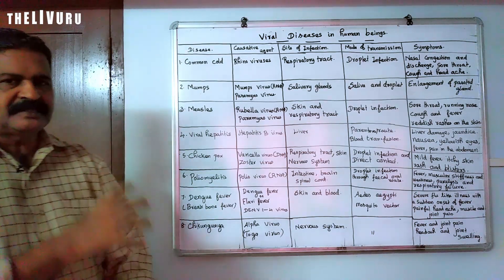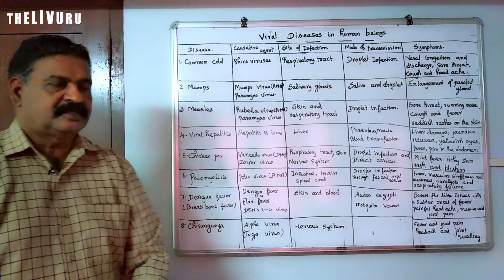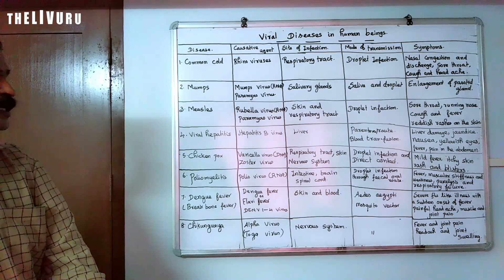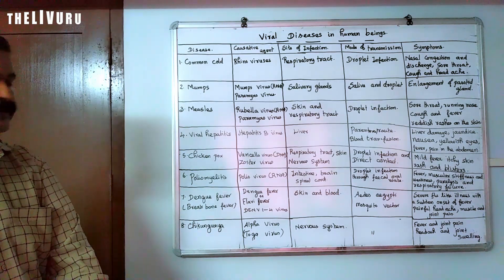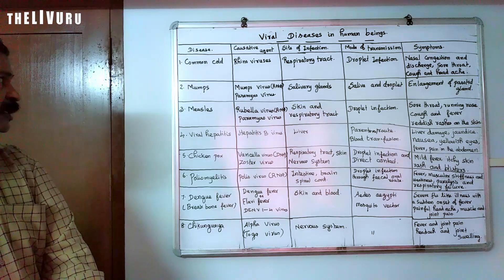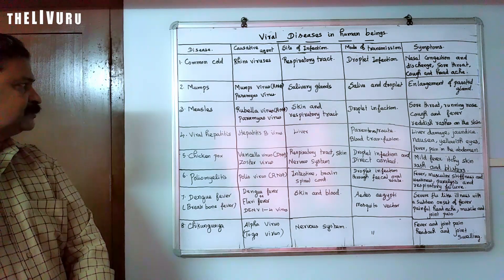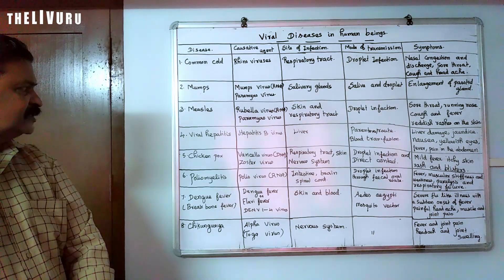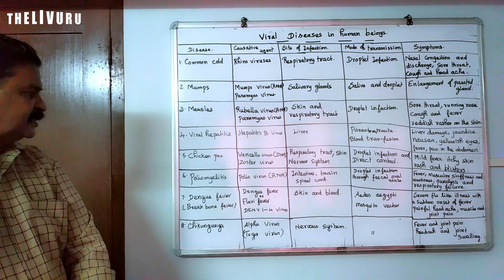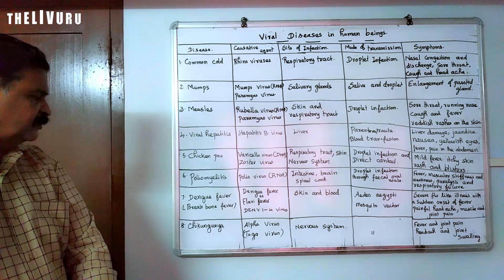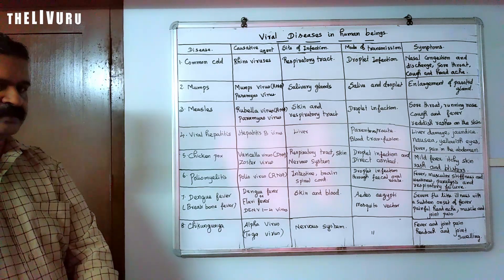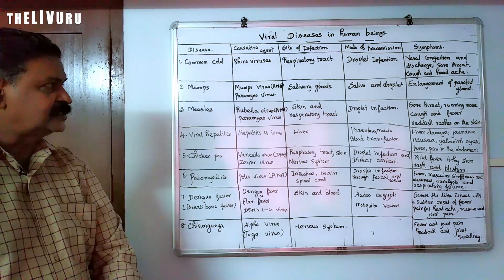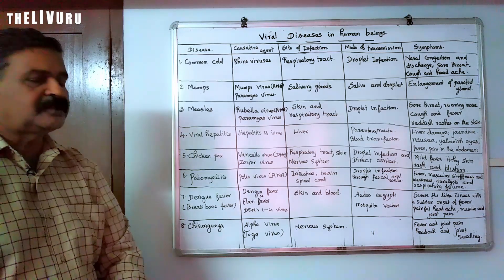So these are the viral diseases which are commonly found in human beings: common cold, mumps, measles, viral hepatitis, chickenpox, poliomyelitis, dengue fever, and chikungunya. In the next class, we will see the protozoan diseases.